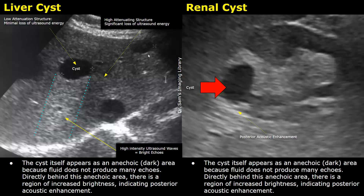In contrast, ultrasound waves passing through solid liver tissues and solid kidney tissues, while completely avoiding the cyst, continue to lose energy as they travel through the organs. These waves do not encounter any low-attenuating structures, resulting in echoes that appear gray.